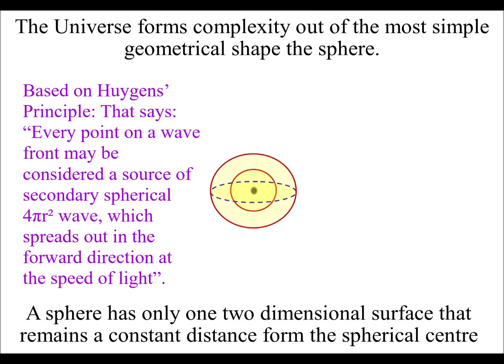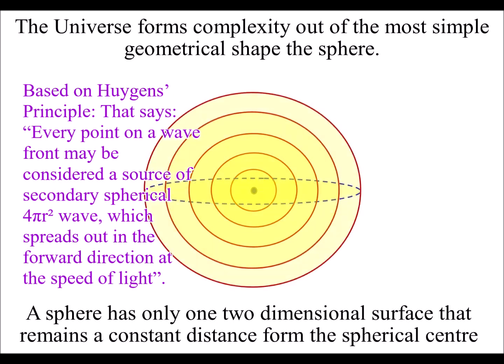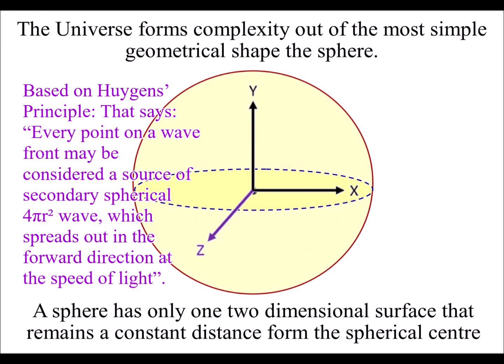If we have light waves radiating out from a center point, it will form a sphere. The interior of the sphere will naturally create three-dimensional space.